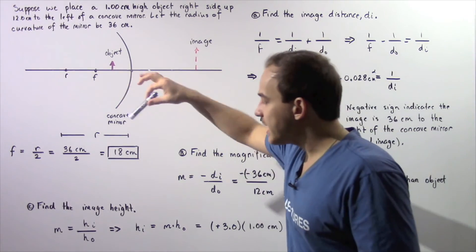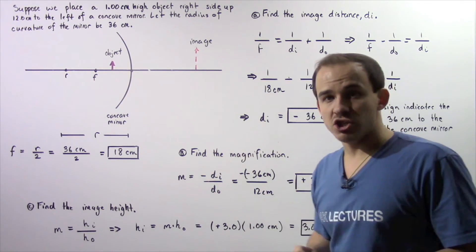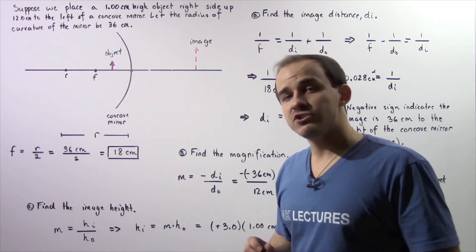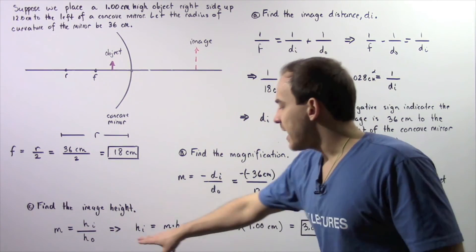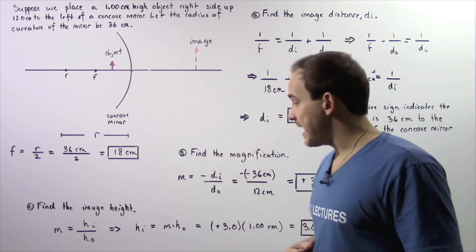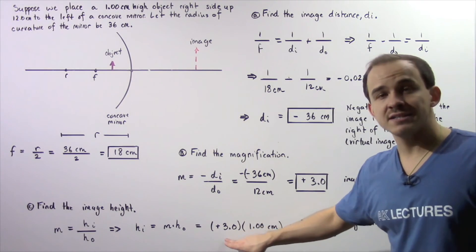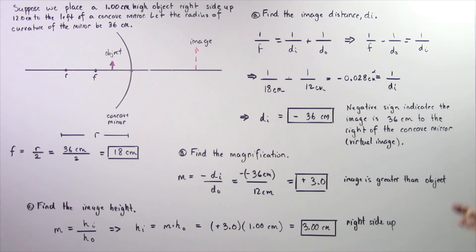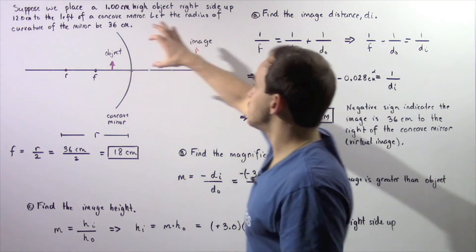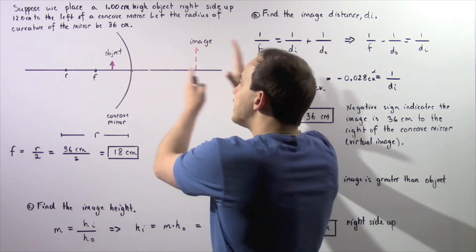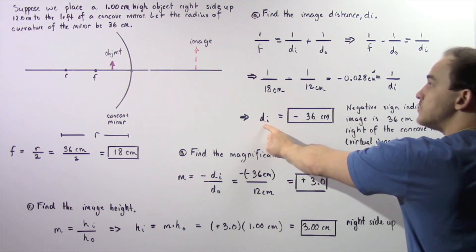Finally, part C: find the image height. M is also equal to HI divided by HO, where HI is the height of the image and HO is the height of the object. Multiplying both sides by HO, the image height HI equals M multiplied by HO. The magnification from part B is 3, and HO is 1 centimeter, so 1 centimeter multiplied by positive 3 gives a height of 3 centimeters. The positive value means the image is right side up and 3 times greater than the original object height — it is a virtual image found behind the mirror.